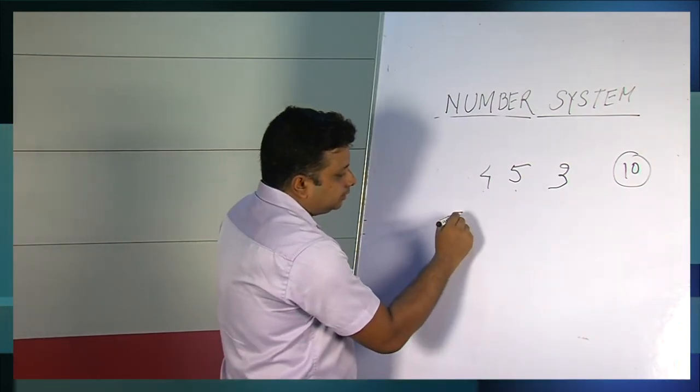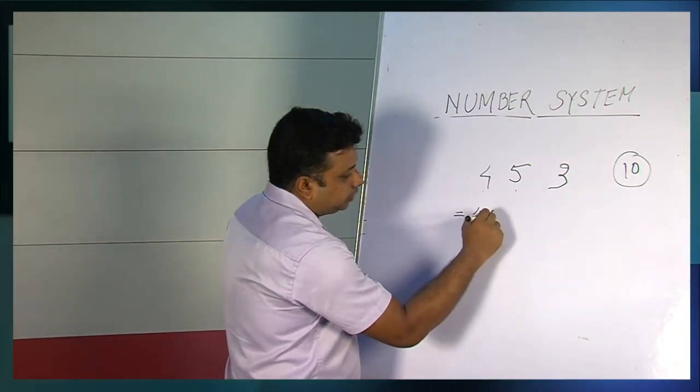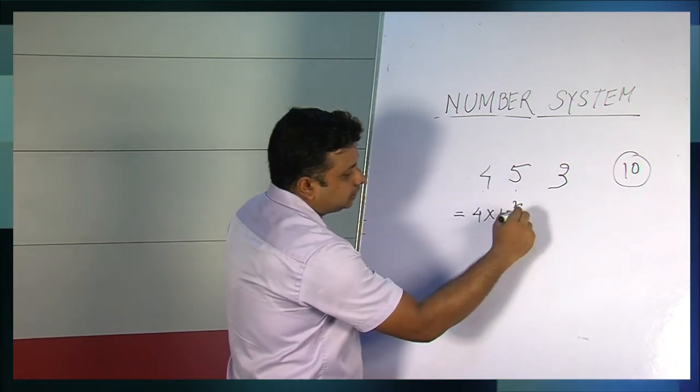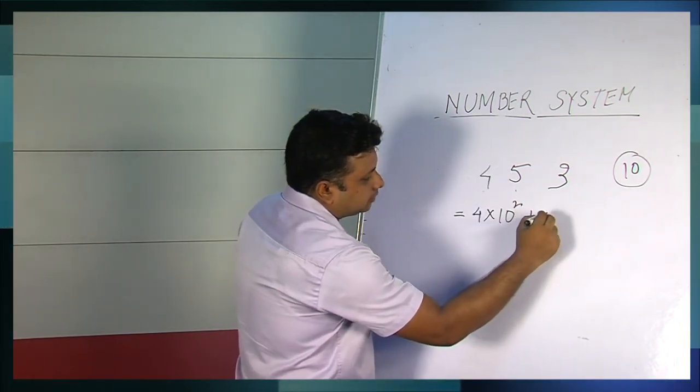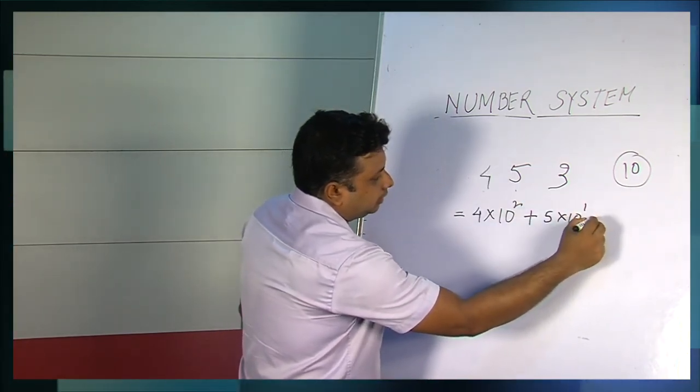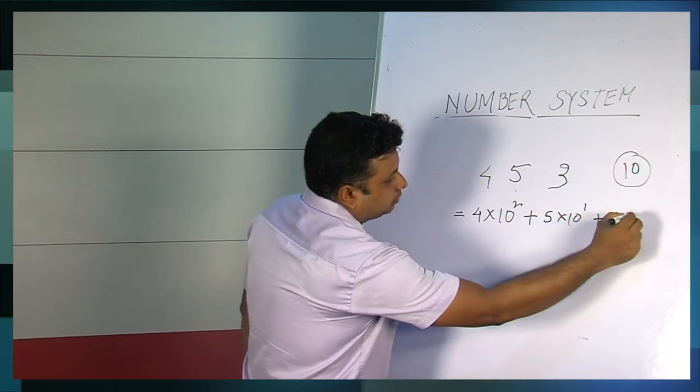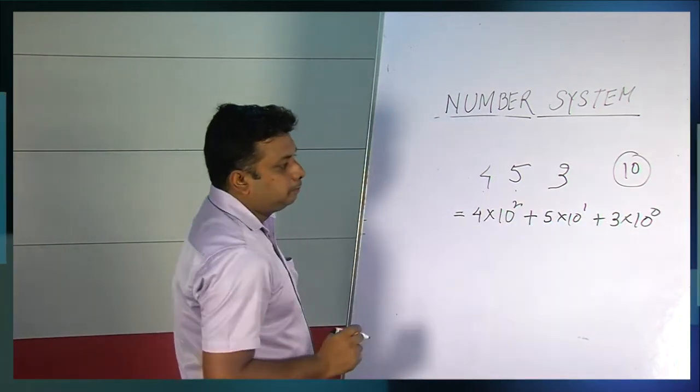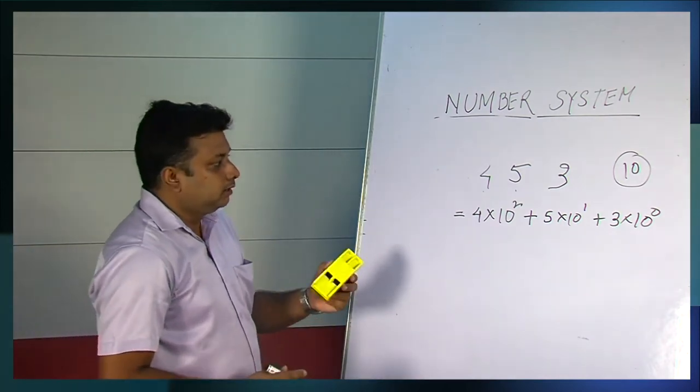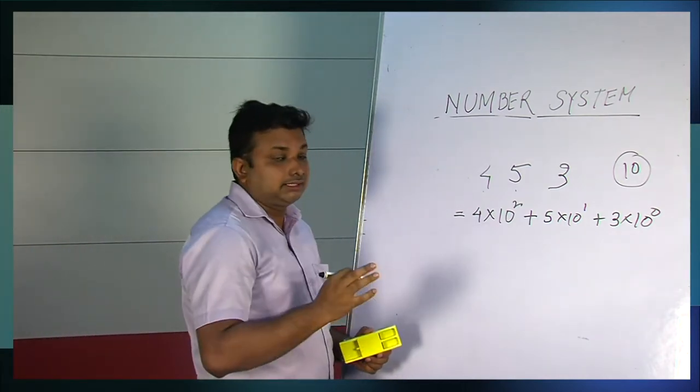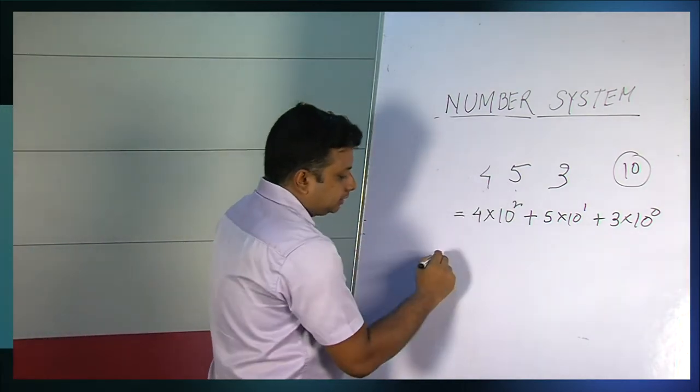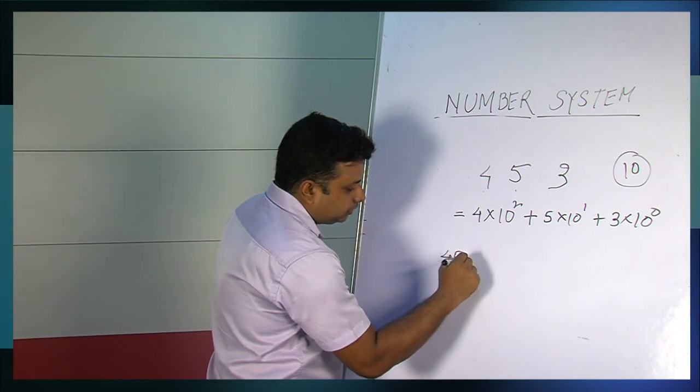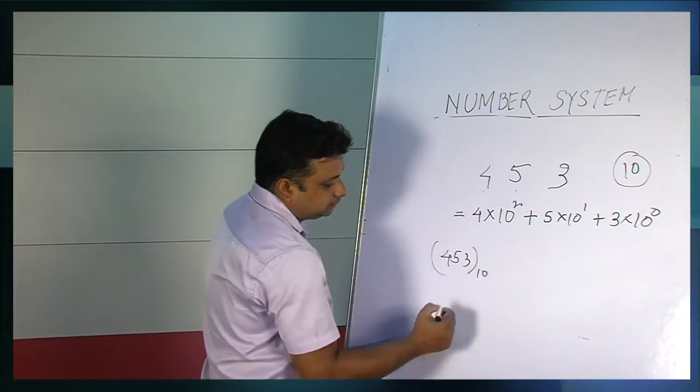So how we write this 453? Actually this is represented as 4 into 10 squared plus 5 into 10 to the power 1 plus 3 into 10 to the power 0. So this is the breakup of the system and when we specifically define that this is a decimal number system, we have to write the base.